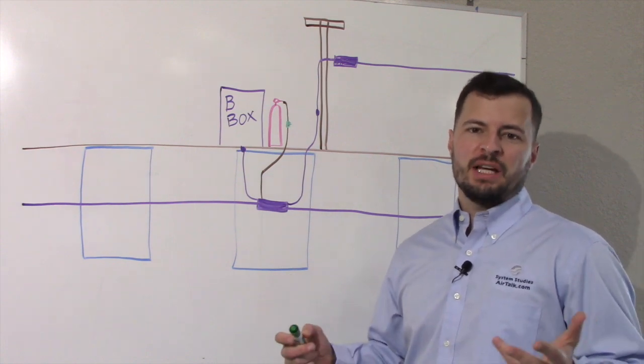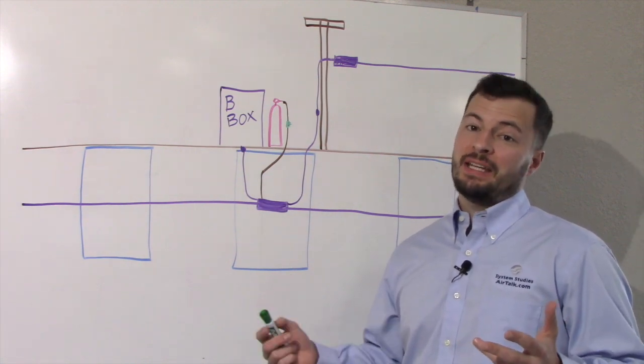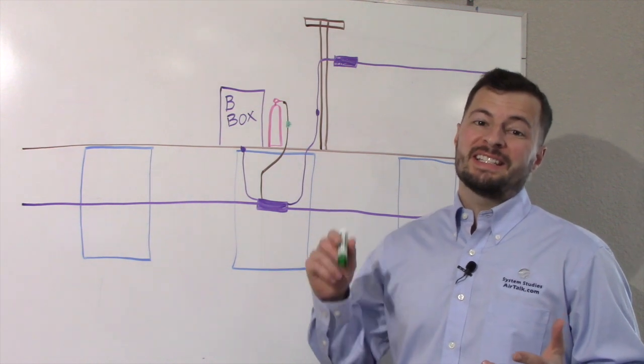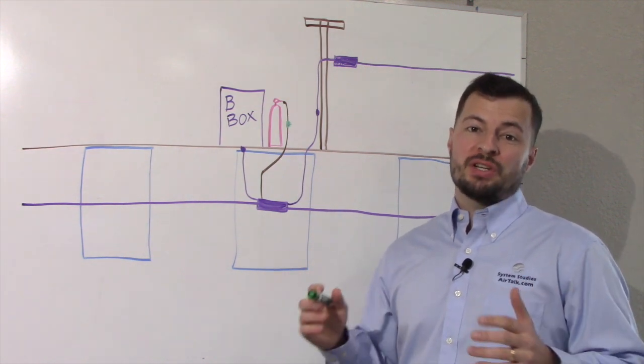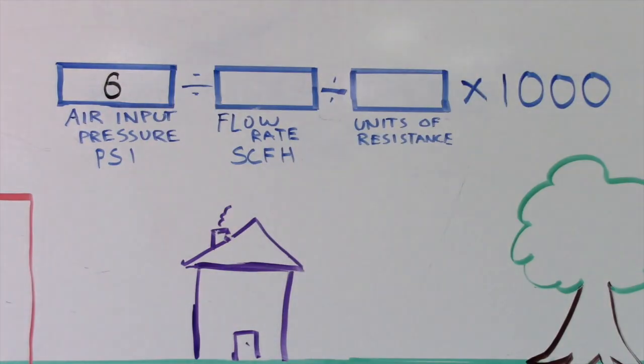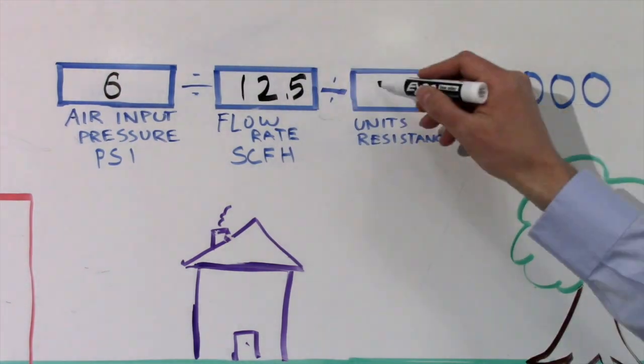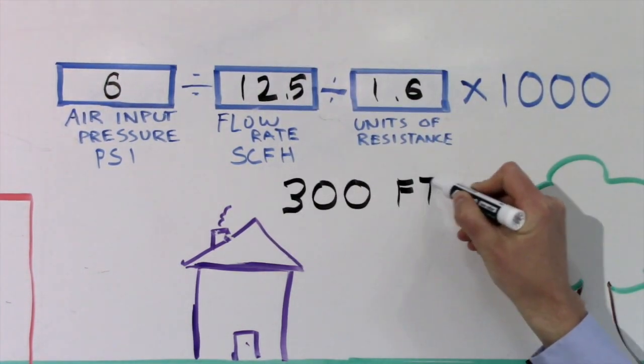A zero leak projection, or ZLP, does not tell us where the leak is, but it will tell us where the leak is not and will dramatically reduce our area of search. Refer to our video titled Zero Leak Projection Calculation for details. It is linked in the video description.